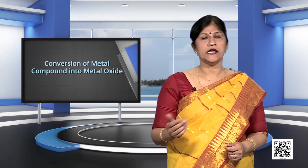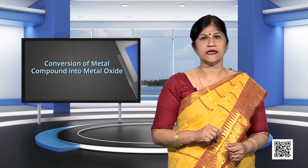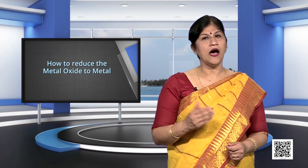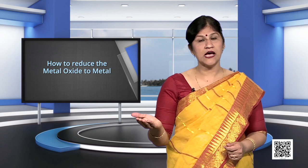In the previous module of this chapter, you studied about the first two steps in metallurgy of metals — that is, concentration of ore and conversion of metal compound into metal oxide. Now, in this module, we will discuss how to reduce the metal oxide to metal.